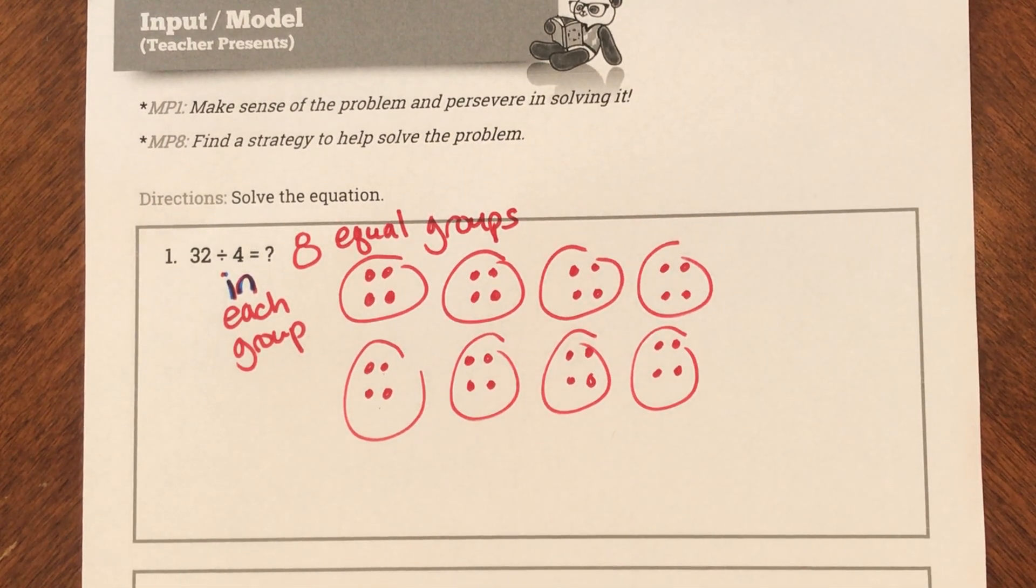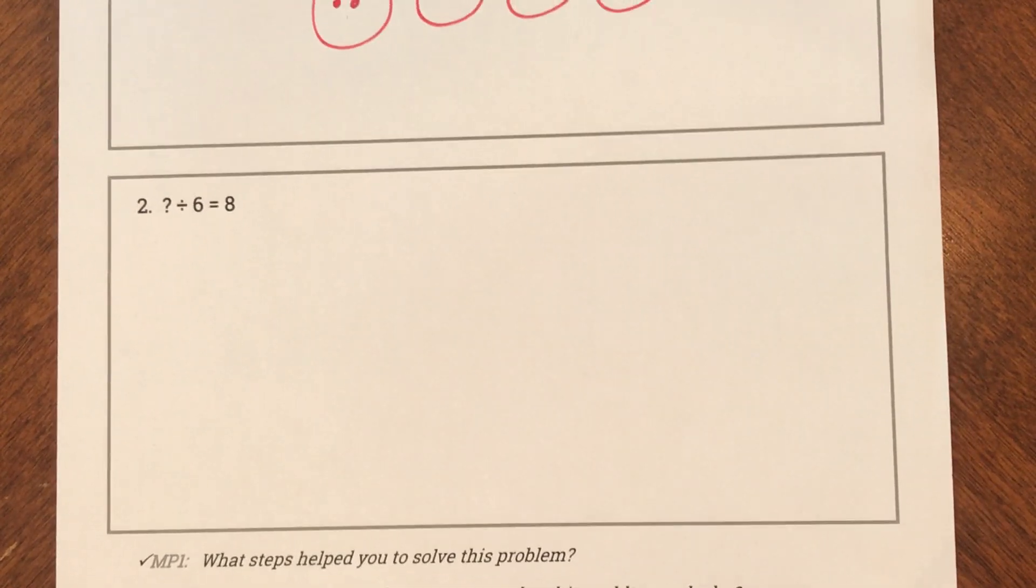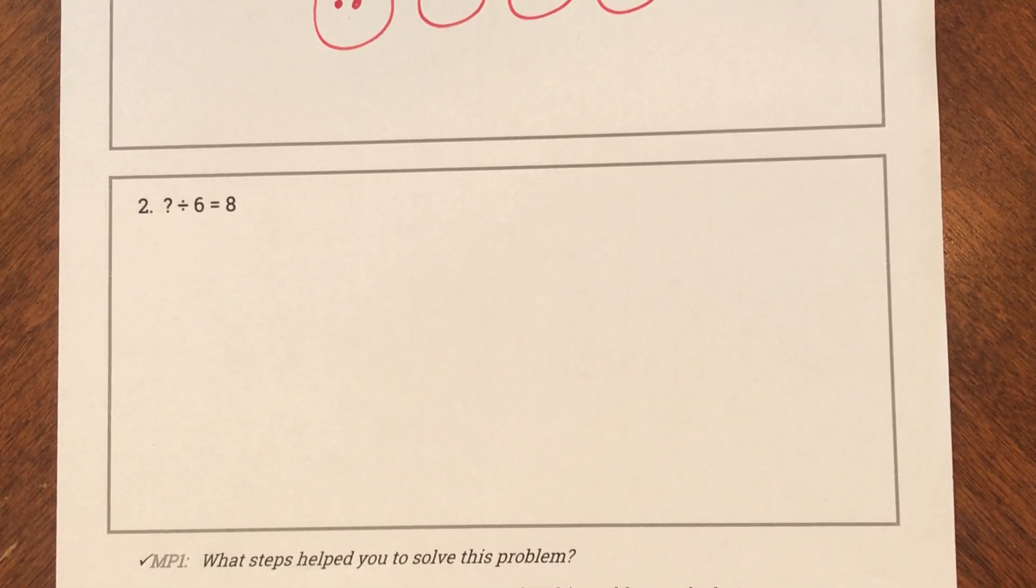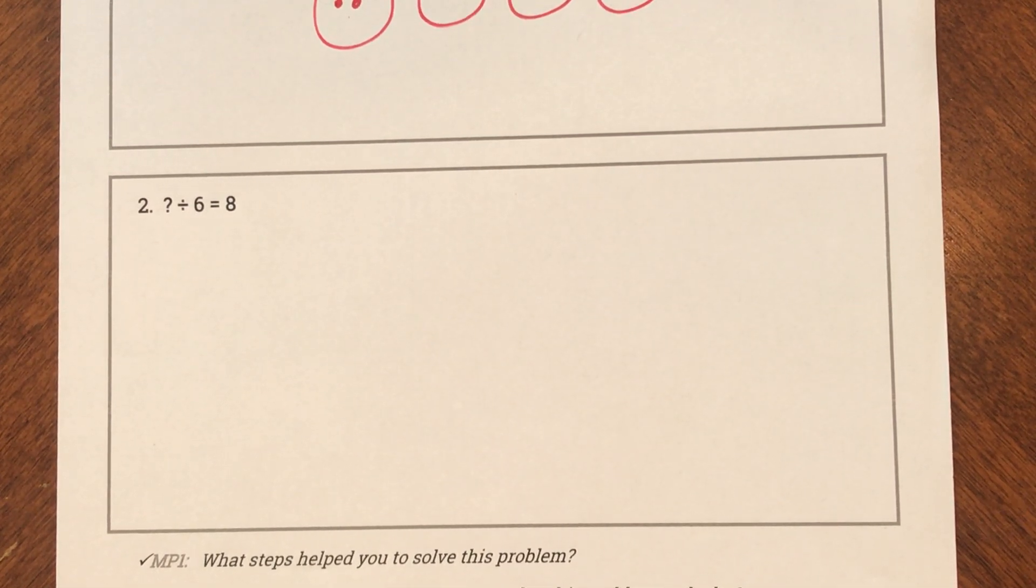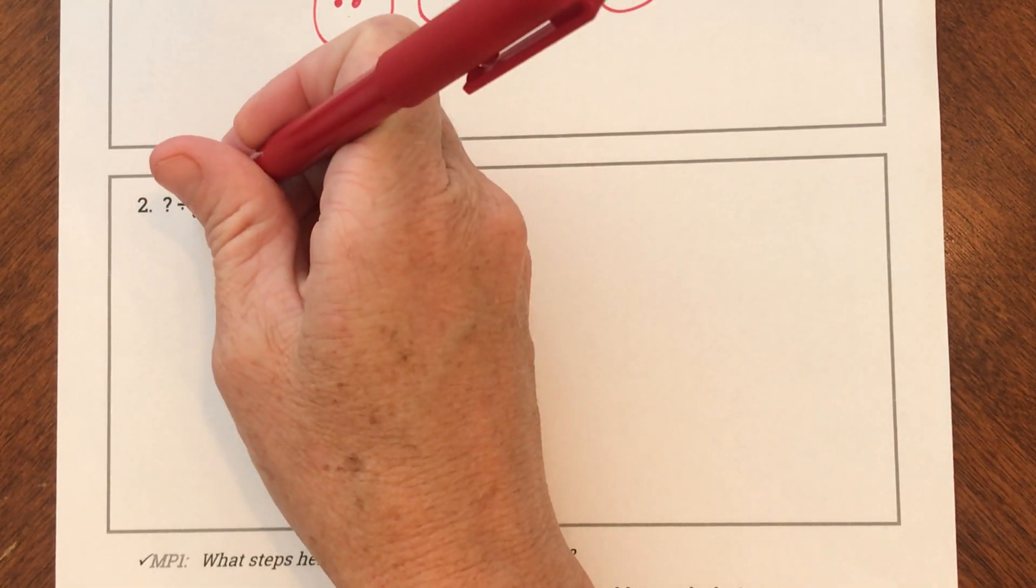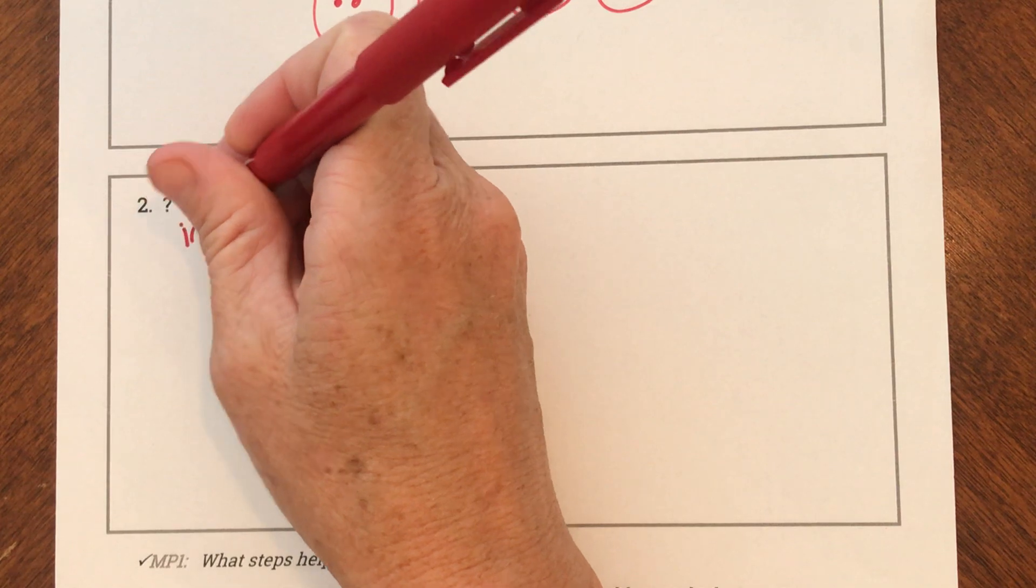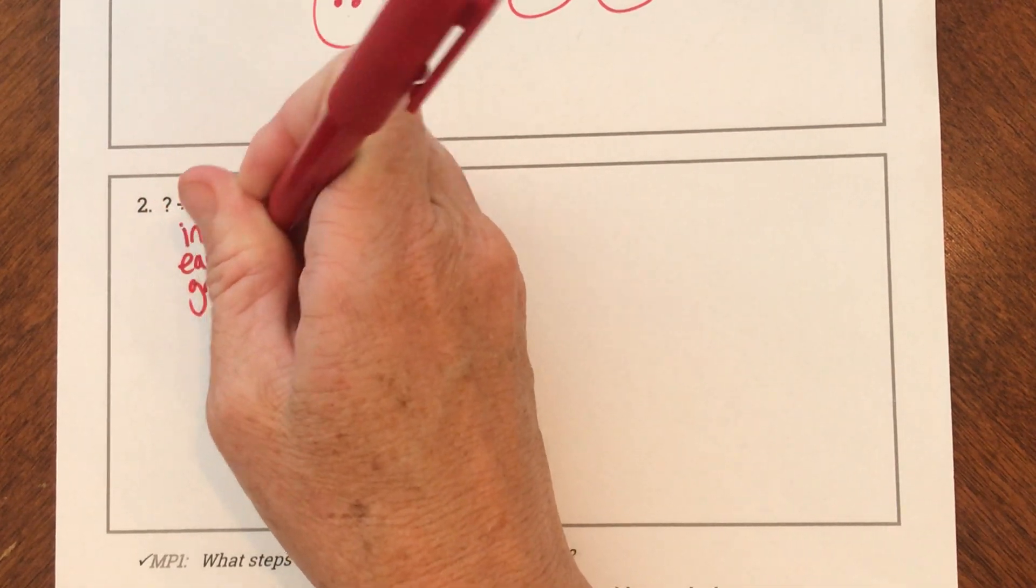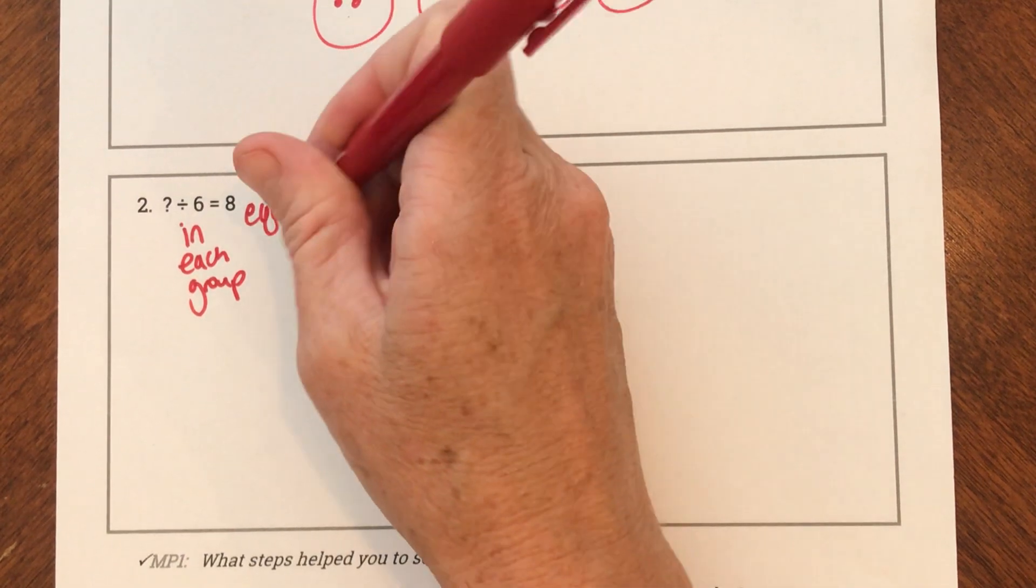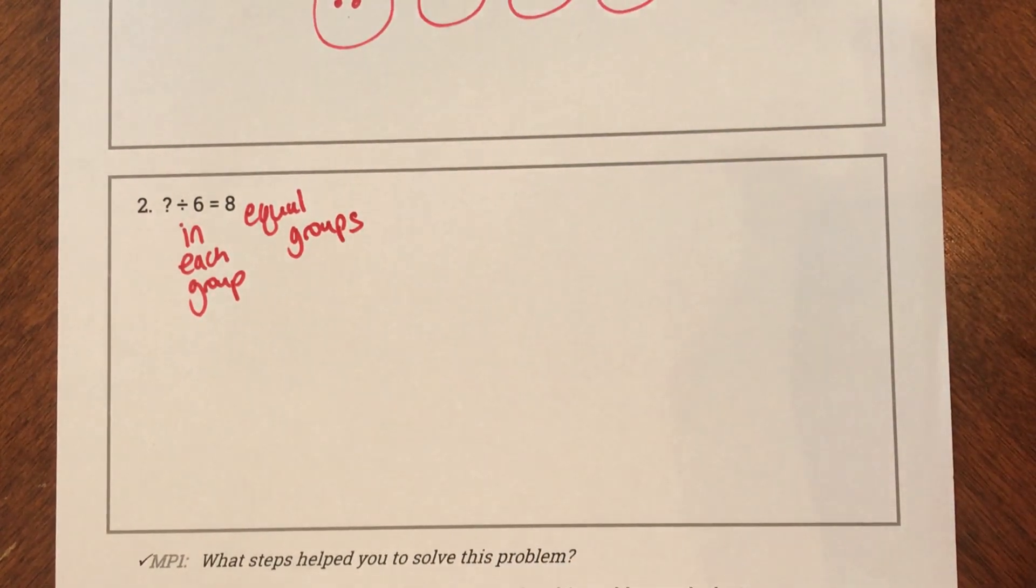Let's look at my next problem. My next problem says question mark divided by six equals eight. So I have something and I'm going to divide it by six, and then I'm going to have eight.